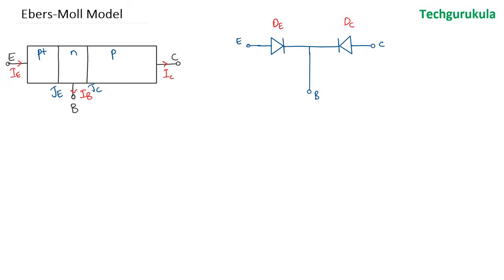Let me call this diode the emitter diode and this one the collector diode. If we take two diodes and connect them in this fashion, obviously they wouldn't work as a BJT, because the first diode D_E cannot control what happens in D_C, and D_C cannot control what happens in D_E. In a BJT, however, the two junctions are interacting junctions — the current flowing in the collector junction is controlled by the current flowing through the emitter junction in active mode.